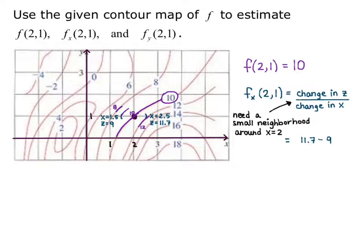So I put in my z2 minus z1, 11.7 minus 9, over my x2 minus x1, so over 2.5 minus 1.5. So I get 2.7. So 2.7 is telling me that that's the slope of the ground if I walked to the right from that point.